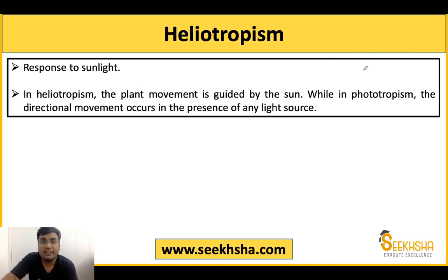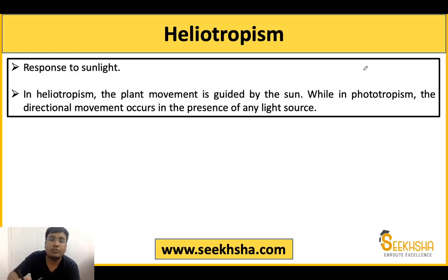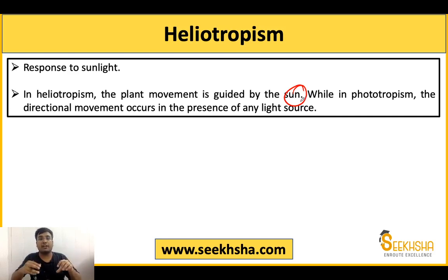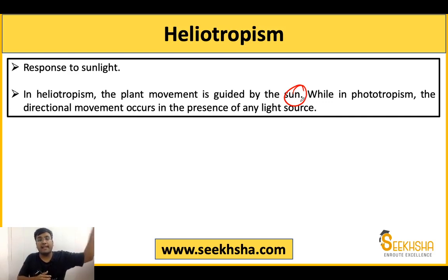Next is heliotropism, which is the plant's growth response specifically to sunlight. You might ask how this differs from phototropism. The difference is that heliotropism is only related to the sun as the light source, whereas phototropism covers any light source — including artificial sources like a bulb. If a bulb is placed near the plant, the plant grows toward it — that is phototropism. Heliotropism is only in relation to sunlight.